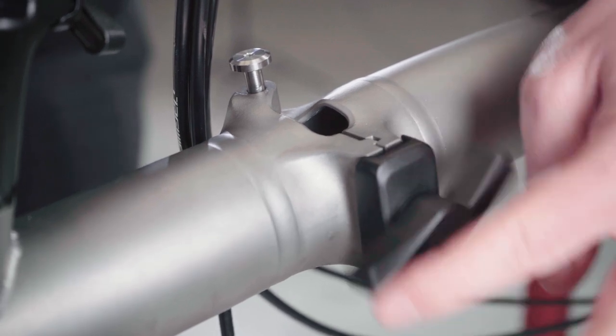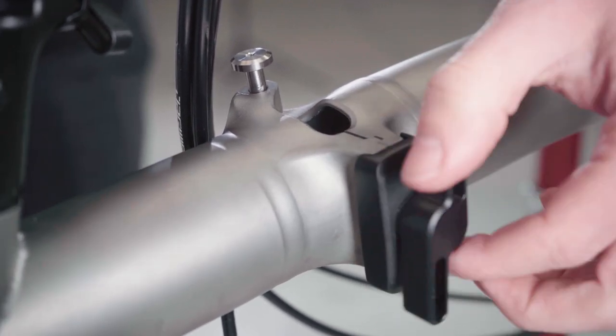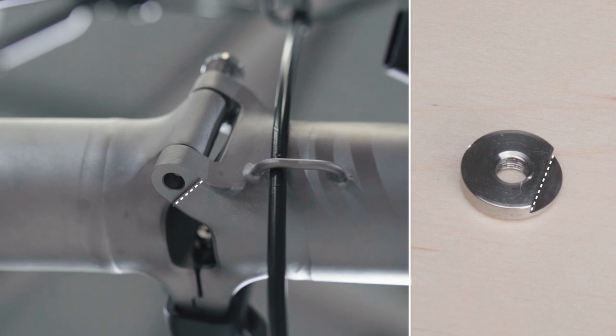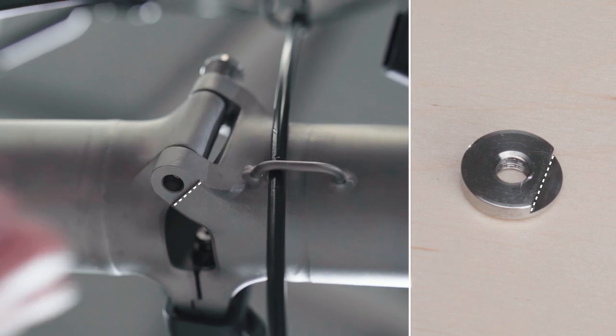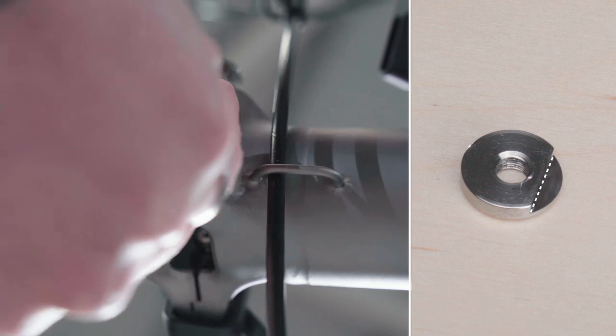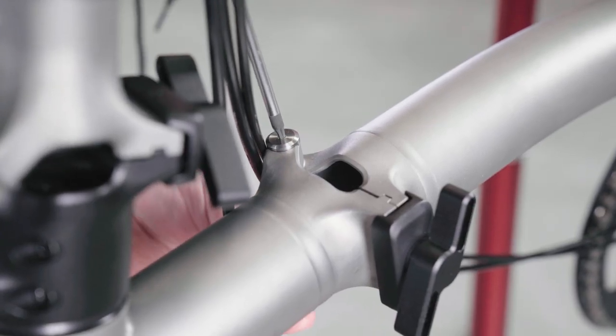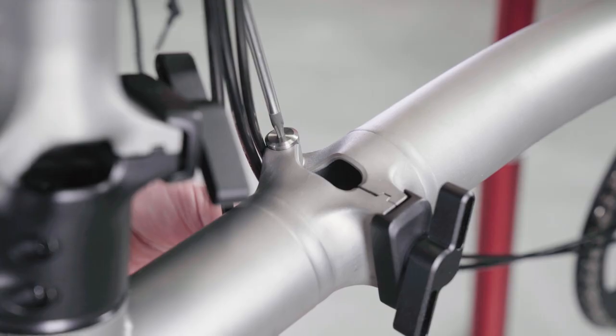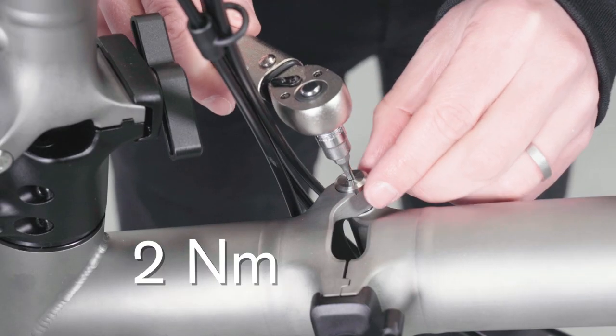Tighten the hinge clamp. Fit the hinge spindle nut and align the flat part of the nut to the flat part of the main frame hinge. Add Loctite 638 to the thread of the button head bolt. Tighten with a T15 Torx screw until the bolt is flush to the main frame. Tighten to 2 Nm.